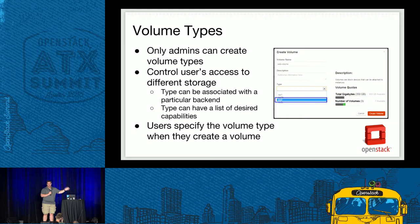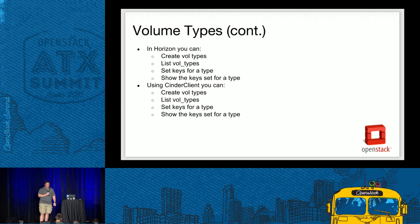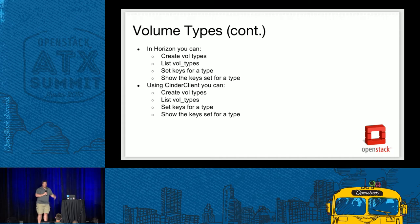On the backend, it goes through the scheduler which finds the appropriate place for storage to be created. We're not doing a live demo — instead we have screenshots so you can see them in the slides online. We'll walk through Horizon so you can see how to do it from that interface, and also what it looks like when creating volume types and using extra specs from the Cinder client. There's good parity in functionality between Horizon and the Cinder CLI, so use whichever you're more comfortable with.